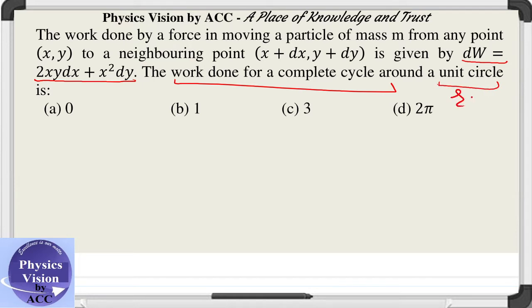Unit circle means r equals 1 - a particle is moving on the surface of a circle with radius equal to 1 unit. Since we know whenever circular motion is given, it is better to use polar coordinates. In case of sphere it is better to use spherical polar coordinates.